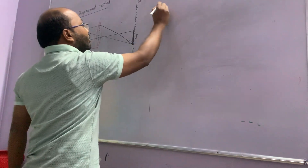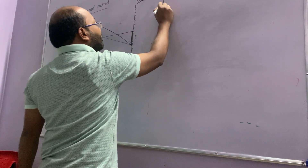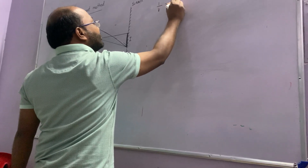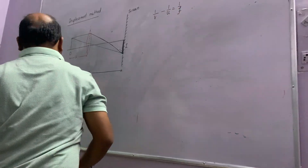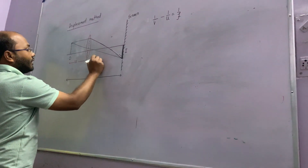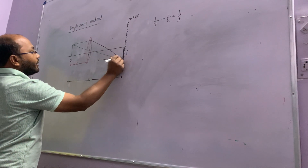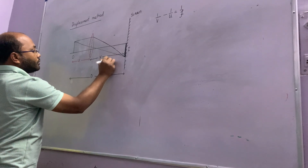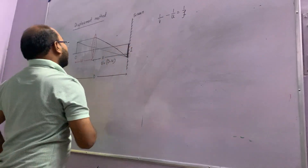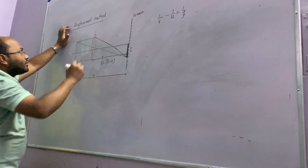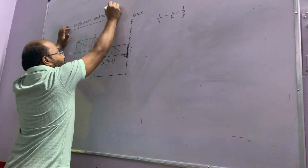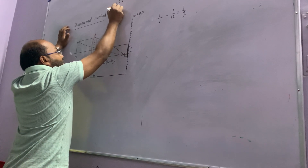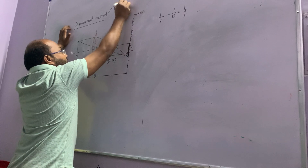We know from the lens formula: 1/V minus 1/U is equal to 1/F. Now this V can be written as D minus U. This method is particularly for a real object, real image, and a converging lens.